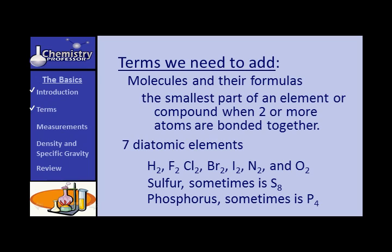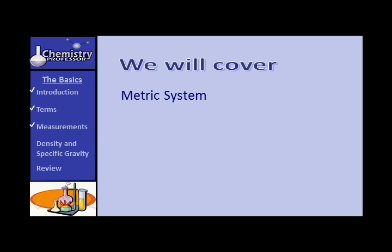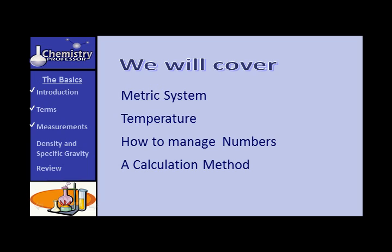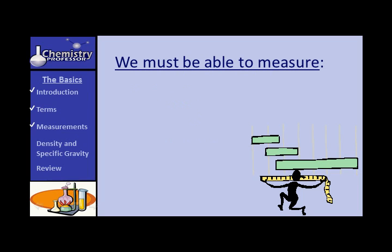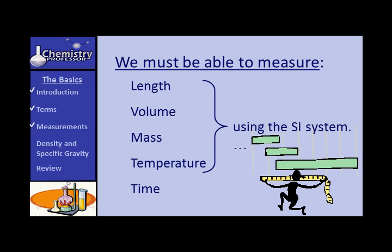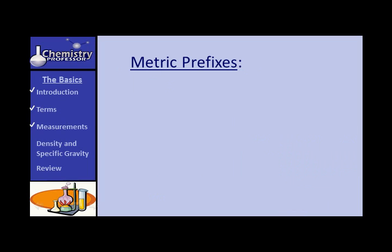In this part of the unit, we're going to talk about the metric system — specifically the prefixes used and the correct way of using them. We'll talk about temperature and how the scales came about. We'll mention how to manage numbers and discuss a particular calculation method you'll find us using a lot throughout this course. We must be able to make measurements in chemistry — length, volume, mass, temperature, and time — and we must do this using the international system. Let's look at the metric prefixes.